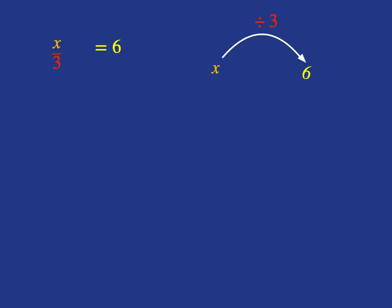We want to get back to x on its own. When we solve an equation, we want to get x on its own. How do we get back to x on its own? We do the inverse operation of division, which is multiplication, so we must multiply by 3.